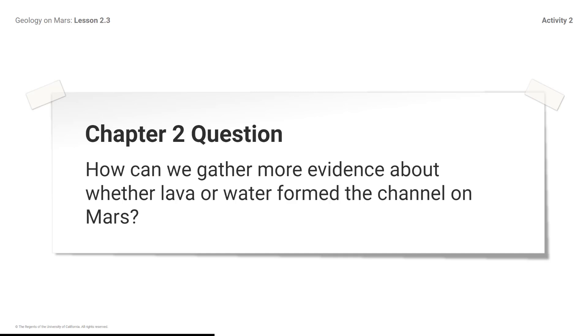Models help scientists learn about the processes that are difficult to observe directly, such as processes that are happening far away, that happened in the past, or that are too fast or too slow to easily observe. Both computer models and physical models are useful for gathering evidence to investigate a scientific question.